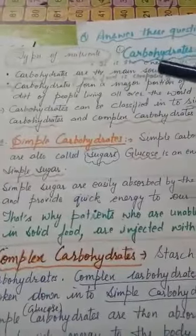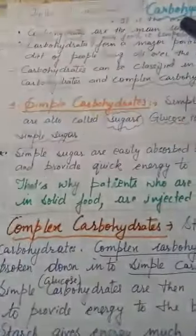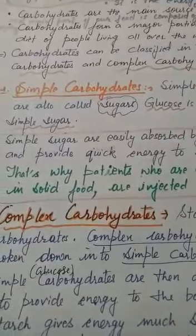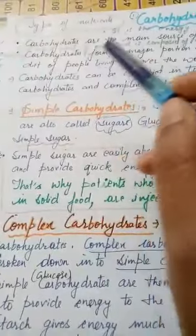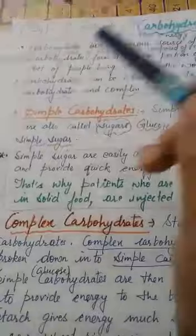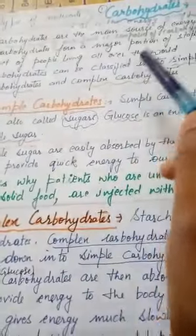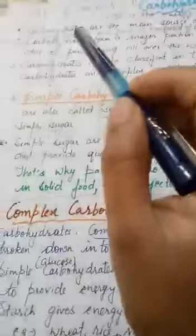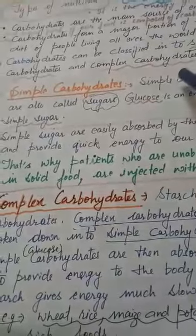Now let's look at types of nutrients. First is carbohydrate. Carbohydrates are the main source of energy — they are the energy giving food. The main part of our food is composed of carbohydrates, like chapati and rice, which form a major portion of the staple diet of people all over the world. Carbohydrates can be classified into simple carbohydrates and complex carbohydrates.